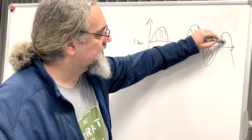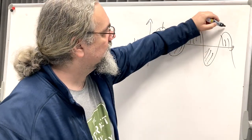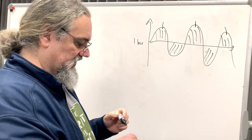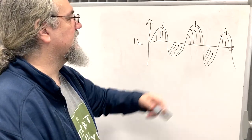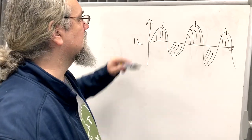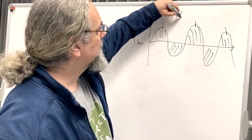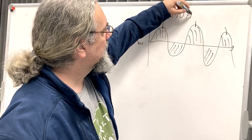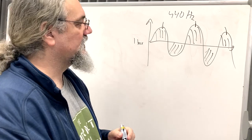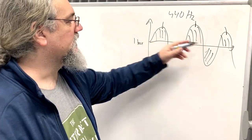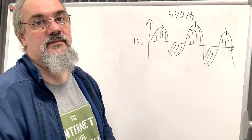It's compressed and decompressed, and if you count the number of peaks per second, that's just the tone of this signal. For instance, if there's 440 peaks per second, then the tone is an A in the middle of the piano.